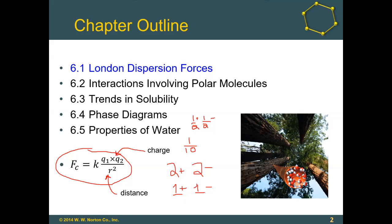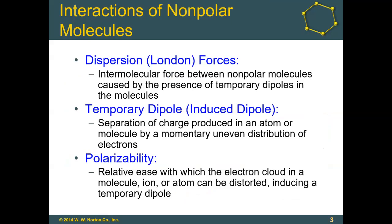For these London dispersion forces, or just dispersion forces, we're looking at temporary dipoles — temporary fluctuations in the charge of the atom or molecule. These temporary fluctuations are caused by instantaneous or momentary uneven distributions of electrons, which give rise to dispersion forces between nonpolar molecules. Connected with this is the idea of polarizability, which is the relative ease with which we can shift the electron cloud in a molecule, ion, or atom — how easy it is to distort the cloud. If we can distort that cloud, we can create a temporary dipole, and then we're going to have dispersion forces between neighboring molecules.